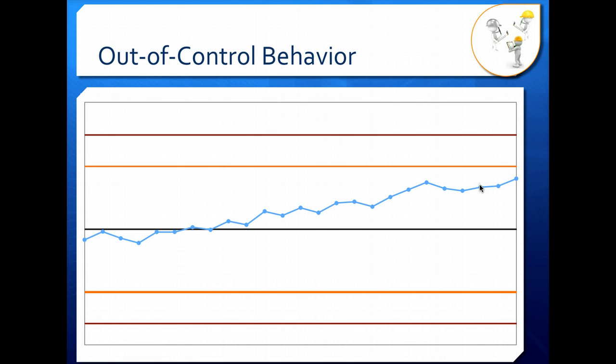Another type of out-of-control behavior is a trend or a steady change in level as seen here. So what we mean by that is we have a gradual increase upward or downward. This can be caused by gradual deterioration of equipment, things like fouling or wear. Those can change your behavior.